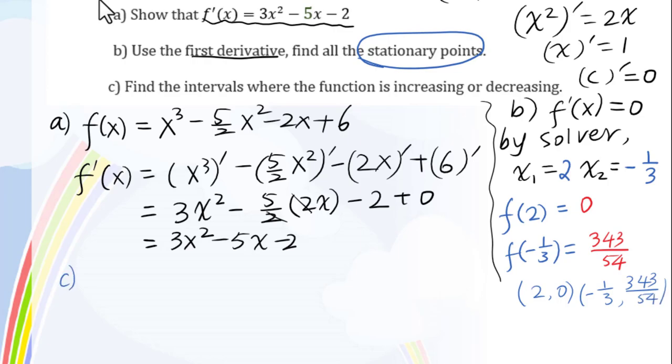Let's go to c. Find the intervals where the function is increasing or decreasing. We do know when f prime of x greater than 0, f of x is increasing. When f prime of x less than 0, f of x is decreasing. Therefore, we need to draw the sign diagram for f prime of x.